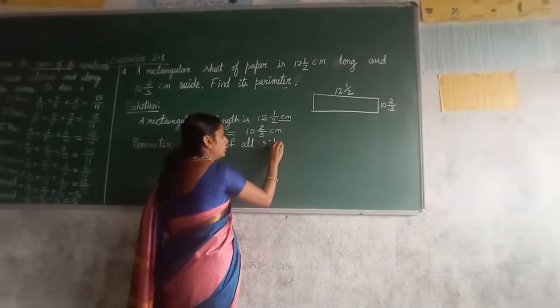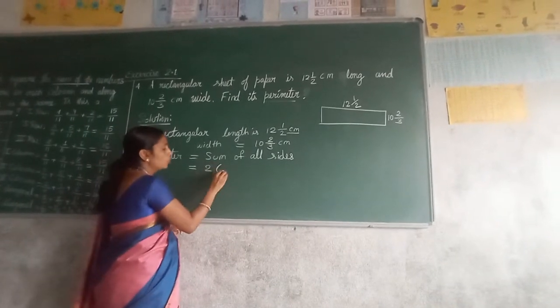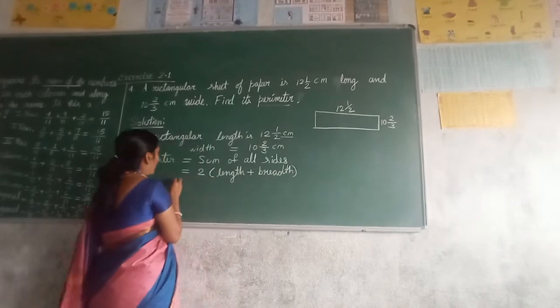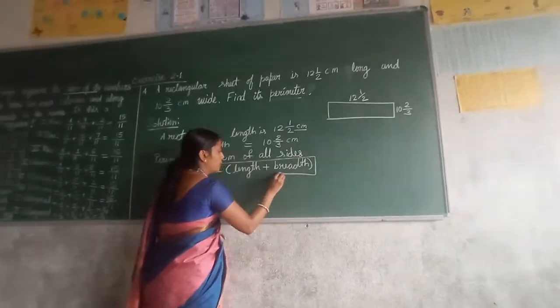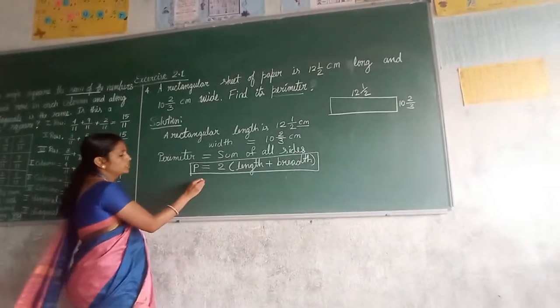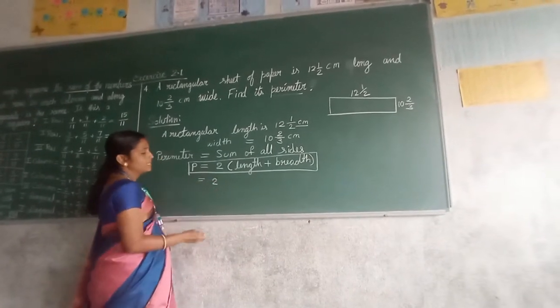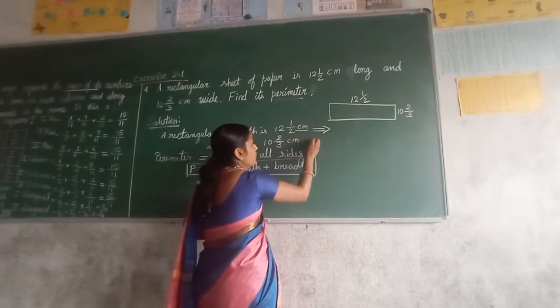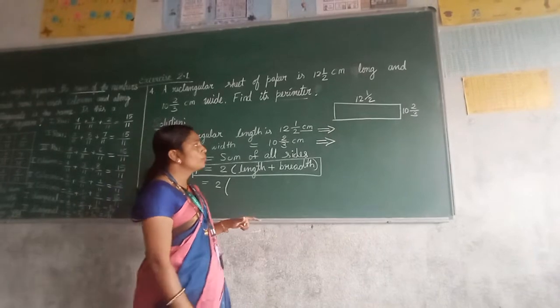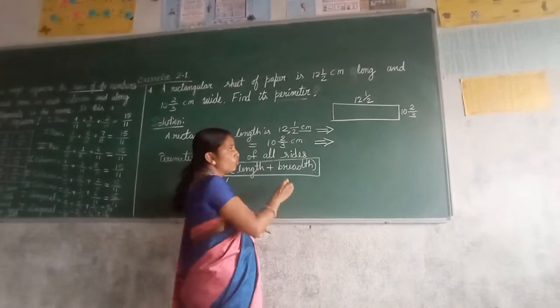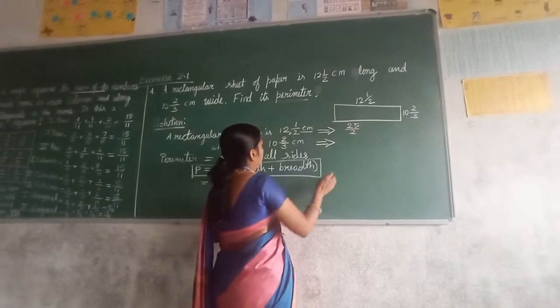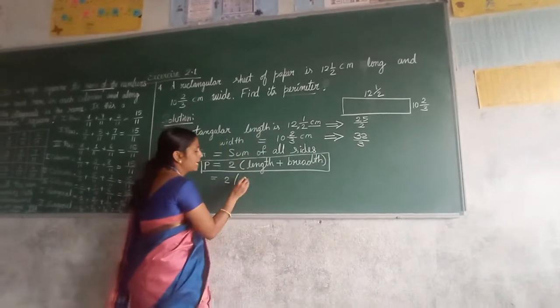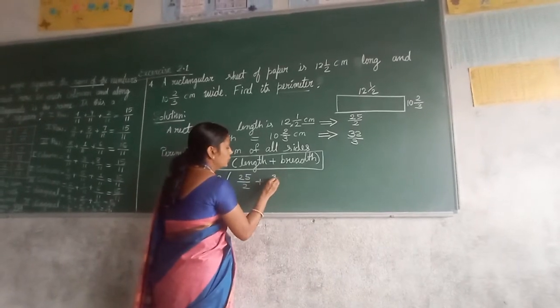But this is one of the regular shapes. We have the formula. What is that formula? 2 into length plus breadth. P is equal to 2 into length plus breadth. Before we put length and breadth, whenever it is in the form of mixed fraction, you have to convert it into improper fraction. 12, 2 is 24 plus 1, 25 upon 2. Here 10 times 3 is 30 plus 2, 32 upon 3.